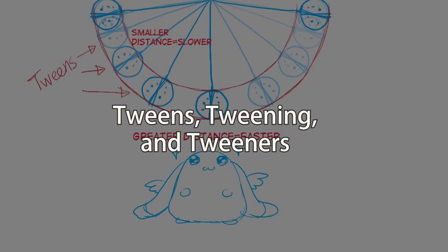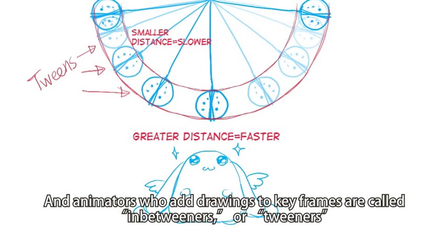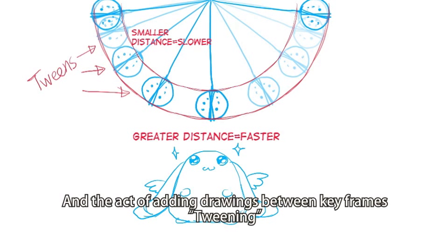Twins, twinning, and twinners. Drawings in between keyframes are called in-betweens. Animators often call it twins for short. Animators who add drawings to keyframes are called in-betweeners or twinners. And the act of adding drawings between keyframes is called twinning.